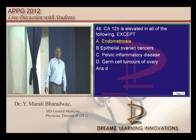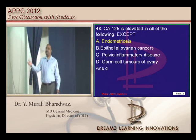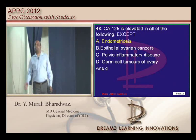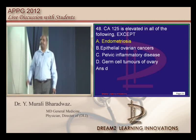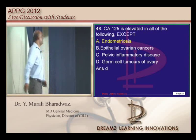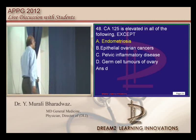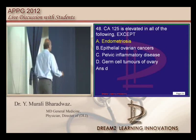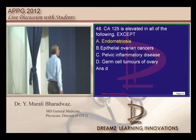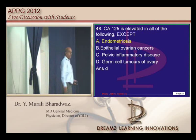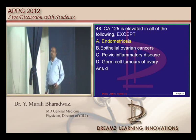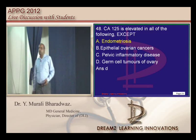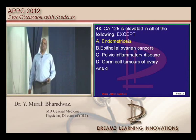What are the conditions other than epithelial ovarian tumors where CA-125 can be elevated? It can elevate with endometriosis and pelvic inflammatory disease, but not germ cell tumors of the ovary — that becomes the answer.